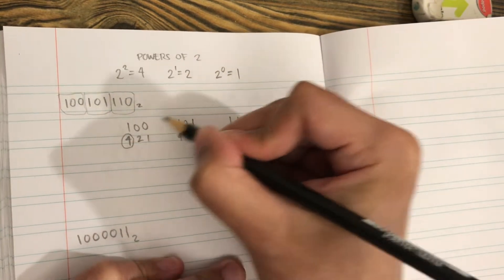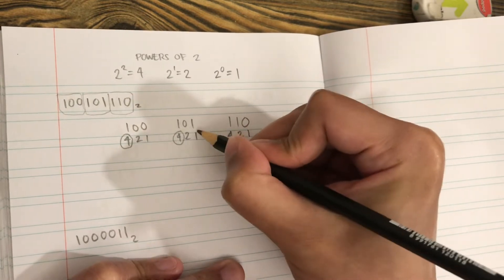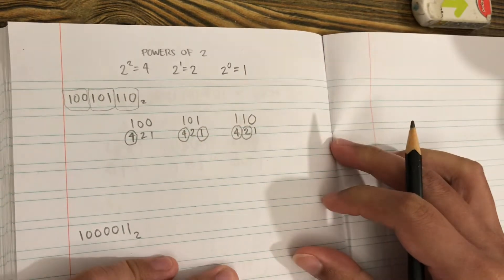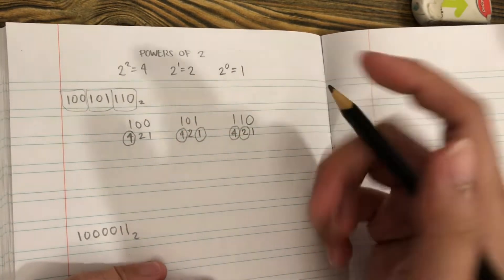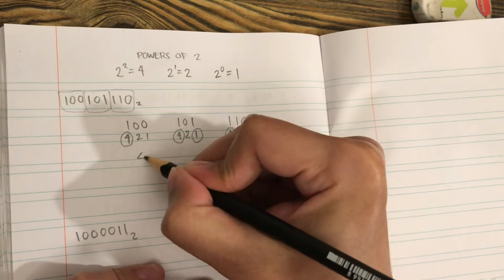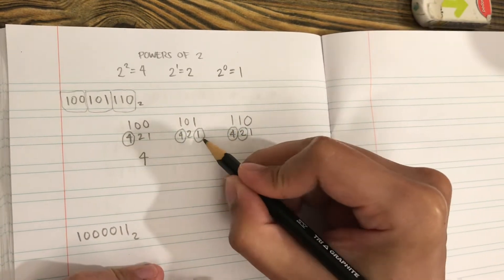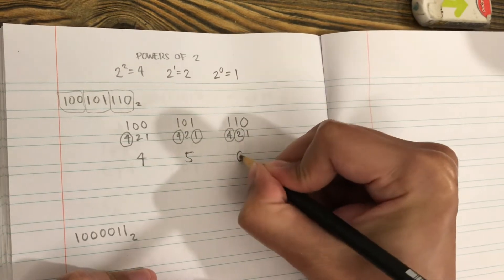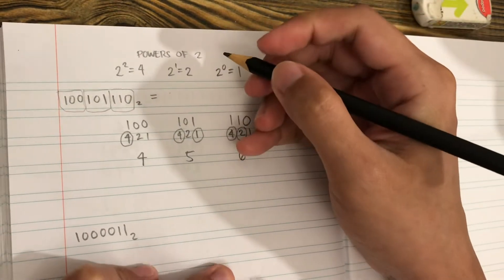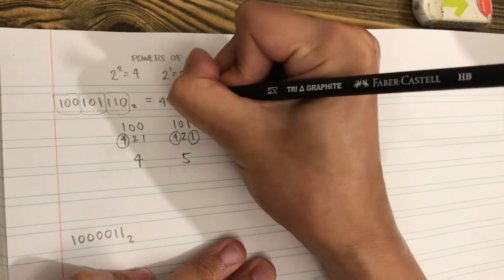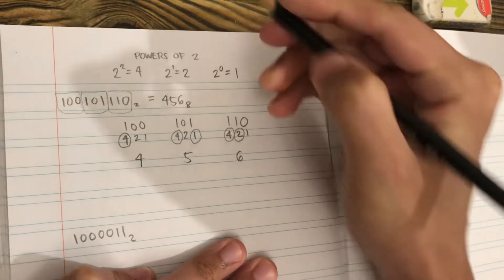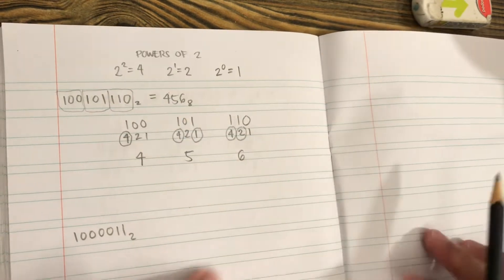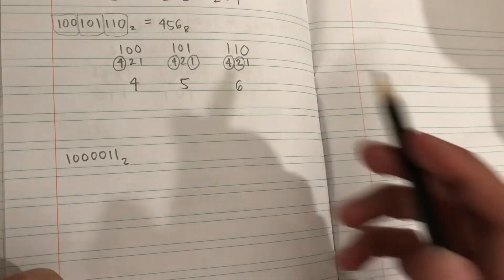This is below 1, this one, this one. Let's ignore the zeros. This would be our digit: 4 for this one, 4 plus 1 equals 5, 4 plus 2 equals 6. So our answer is 4, 5, 6. This binary number when converted to octal will be 456.